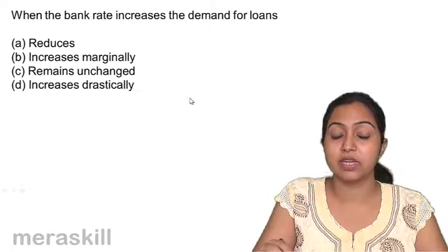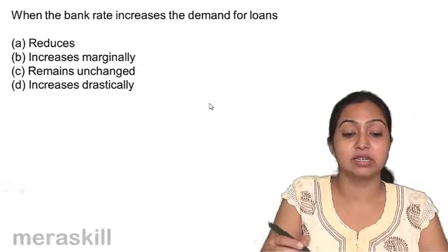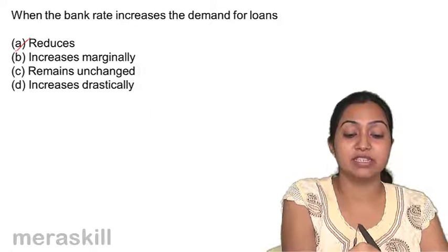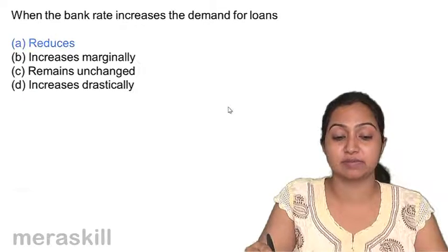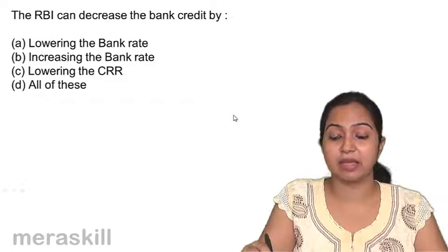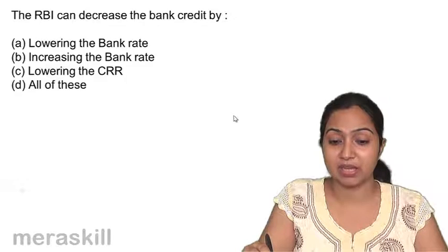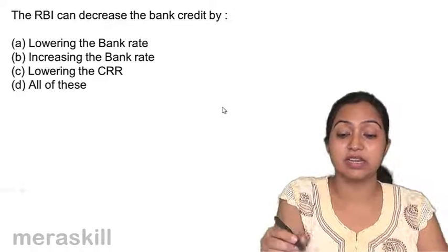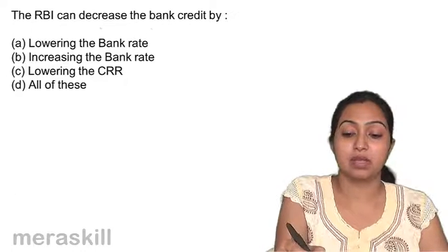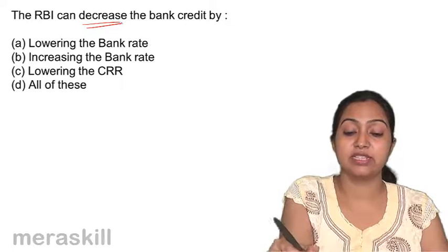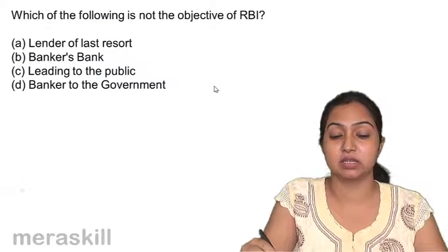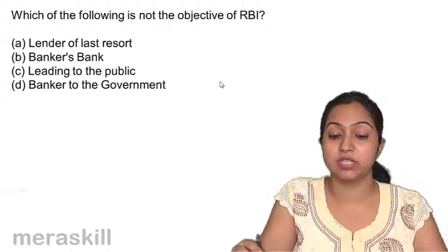When the bank rate increases, the demand for loans decreases. When bank rate increases, loans become expensive. To decrease bank credit, you should increase the bank rate — not lower it. Lowering the CRR would increase credit, not decrease it. So the answer is: increase the bank rate.